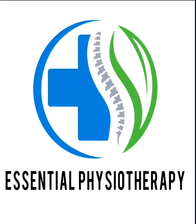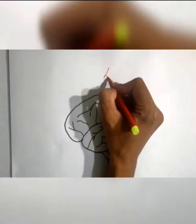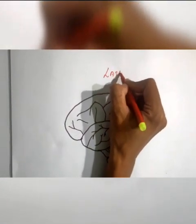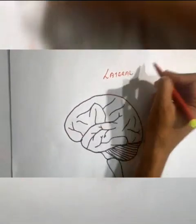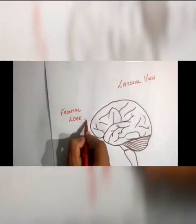Before going to the blood supply, it's important to take a look at the basic anatomy of the brain. This is the lateral view of your cerebral cortex.